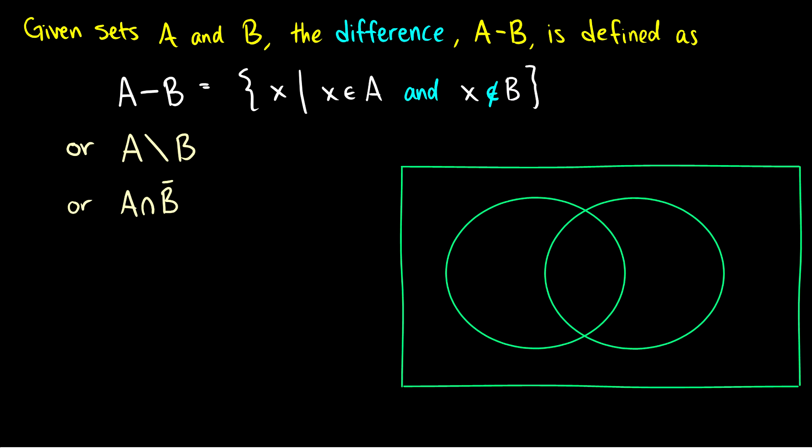The last operator I want to talk about is the difference. So A minus B. This is sometimes written A backslash B or A intersection B complement, which is exactly what it is. And I think visually it's best described visually.